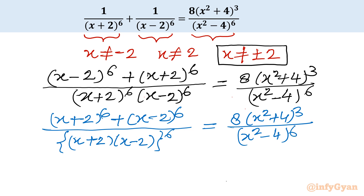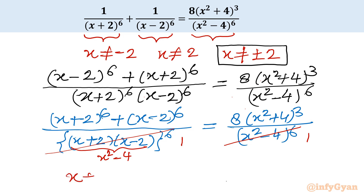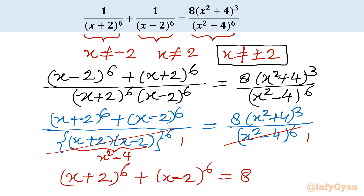Now I take power 6 in the denominator. I write the denominator as (x+2)(x−2) raised to power 6, which equals (x²−4)⁶. The right-hand side also has (x²−4)⁶, so we can cancel these two denominators. What is left is: (x+2)⁶ + (x−2)⁶ = 8(x²+4)³.